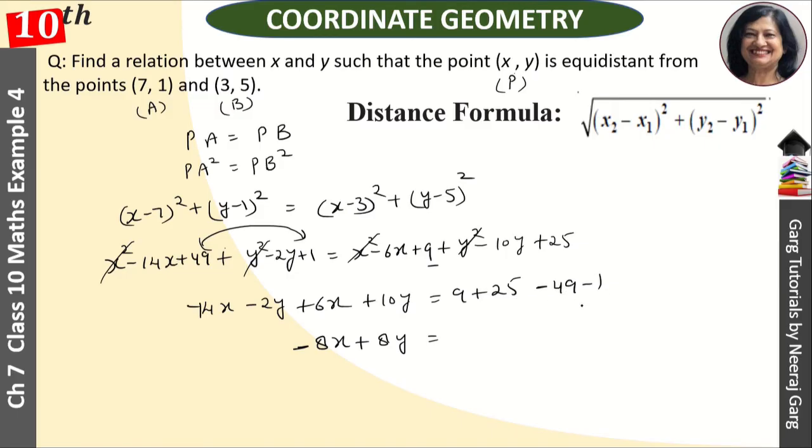We divide this equation by -8 to simplify it, and we get x - y equals 2.